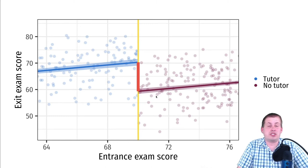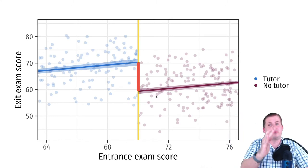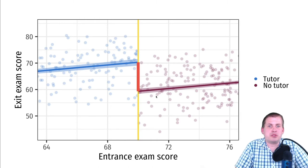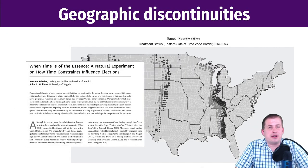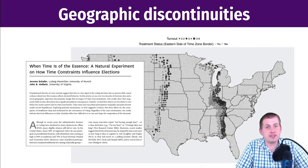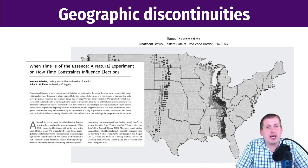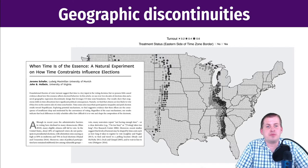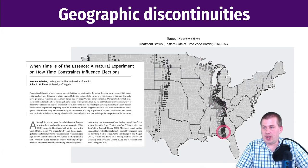Regression discontinuity is a very popular method in economics, political science, and social sciences generally — mostly because it's super intuitive. You say there's a rule, compare people on either side, and see if there's a difference, creating treatment and control groups without a randomized controlled trial. For example, there's a cool paper that finds a discontinuity based on time zones: researchers wanted to see if having more sunlight influences voting patterns, hypothesizing that if it stays lighter longer, people will vote more, but if it gets darker sooner, they'll leave lines and go home.